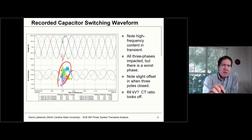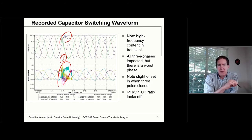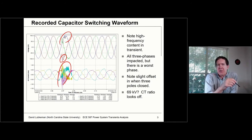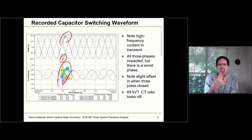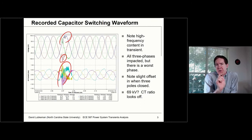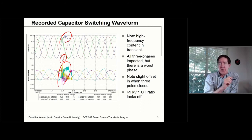If I have some source impedance, I'm going to get an additional voltage drop across that source impedance due to the inrush current, and this is going to show up in the voltage. It's going to tend to cause overvoltages and power quality problems. What we're concerned with in this particular lecture is how we can actually quantify and model this.